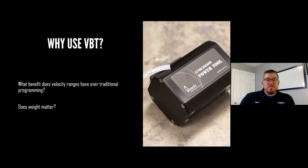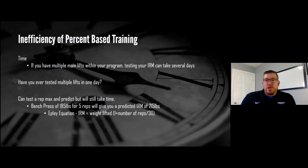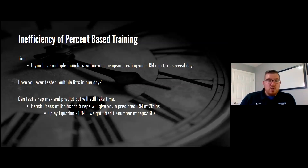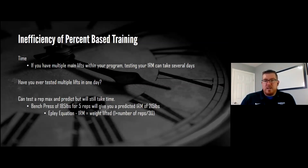It also helps create a competitive environment in the training center because athletes like to compete and try to hit their reps within the speed range. Traditional percent-based programming would be something like five sets of five on a back squat at 65%. Let's look at some inefficiencies with percent-based training — and it doesn't mean it's bad, just that we're looking at an alternative.